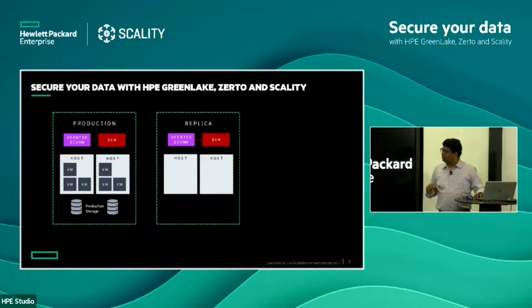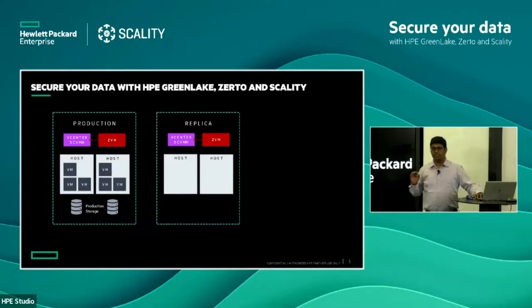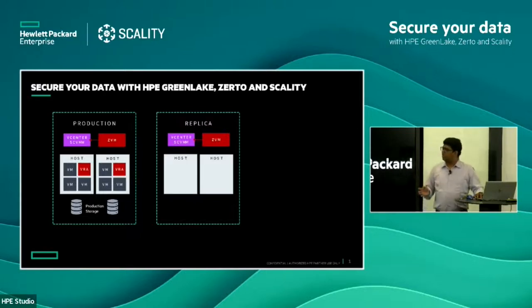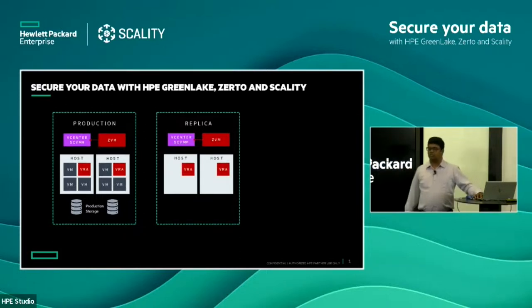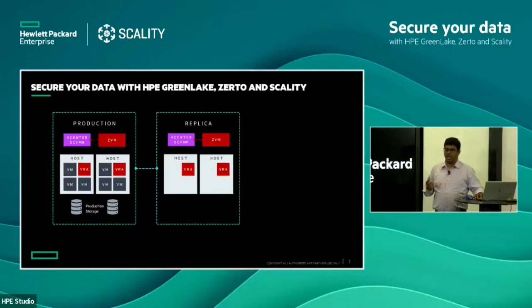To configure Zerto, the primary piece is software-only. We need a management tool called Zerto Virtual Manager, installed on both the production and replica environments. As David mentioned, there is no agent for guest VMs — we just need the Zerto Virtual Replication Appliance installed on all hypervisors. This can be provisioned individually per host or per cluster. Once Zerto Virtual Replication Appliances are deployed on both sides and the sites are paired, we can provide continuous data replication and protection between the two sites.